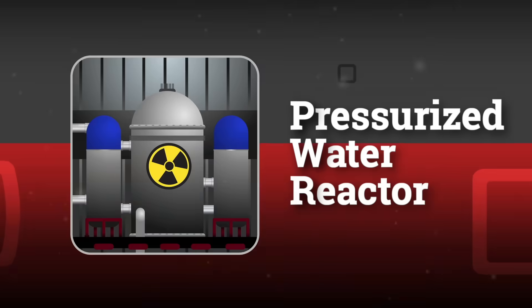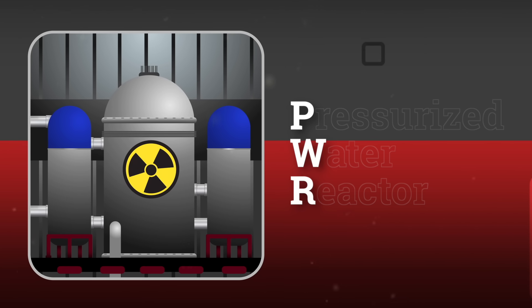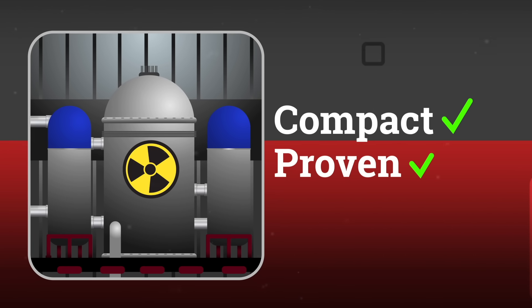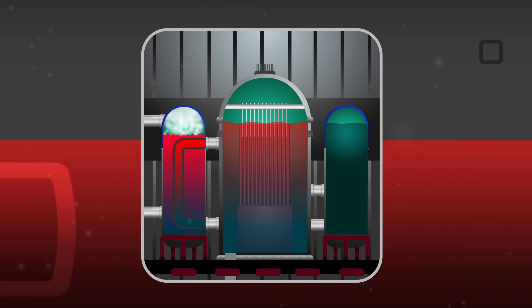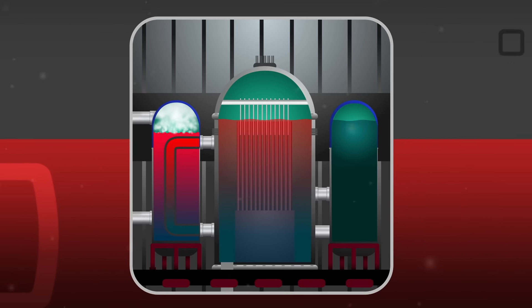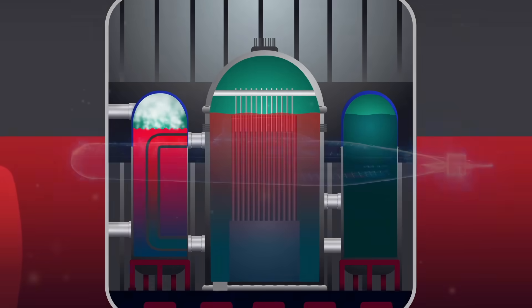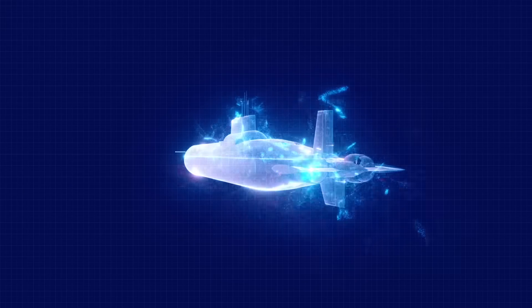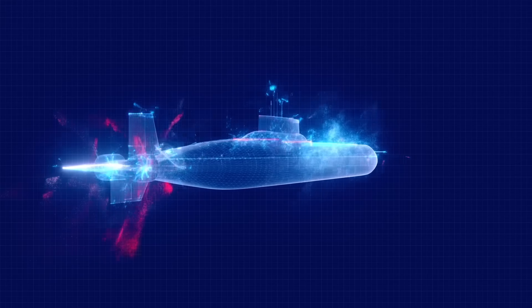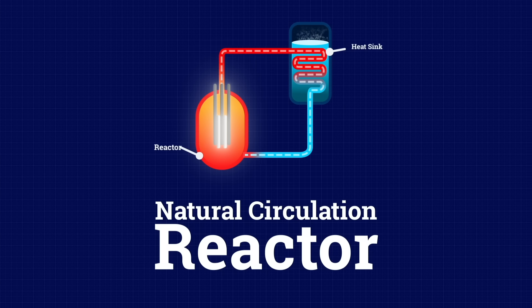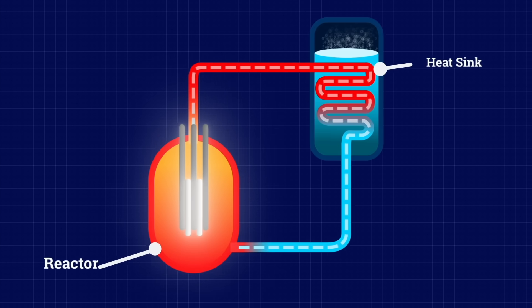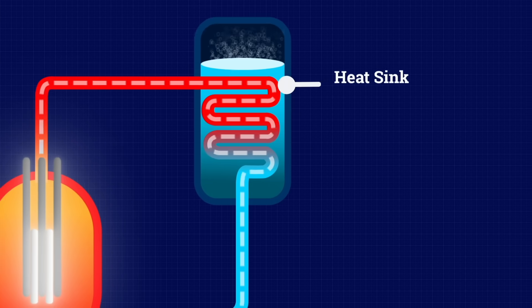Most submarines use a pressurized water reactor, or PWR, because it's compact, proven, and safe. It is the industry standard. But pressurized water isn't the only way to cool a nuclear reactor. Some submarines, especially older or experimental models, have used natural circulation reactors. These systems rely on basic physics. Hot water rises, cold water sinks.